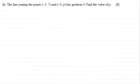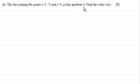Hi there. For this question we've been given that the line joining the points (-2, 7) and (-4, p) has a gradient of four. We've got to find the value of p for three marks. If you'd like to have a go at this and haven't done so already, just pause the video.